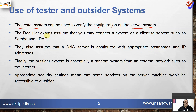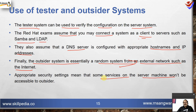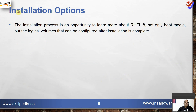The tester system can be used to verify the configuration on the server system. The Red Hat exam assumes you may connect to a system as a client, such as for Samba and LDAP. It also assumes that a DNS server is configured with appropriate host names and IP addresses. The outsider system is essentially a random system from an external network such as the internet. Appropriate security settings mean that some services available on the server from the tester should not be accessible from the outsider network.